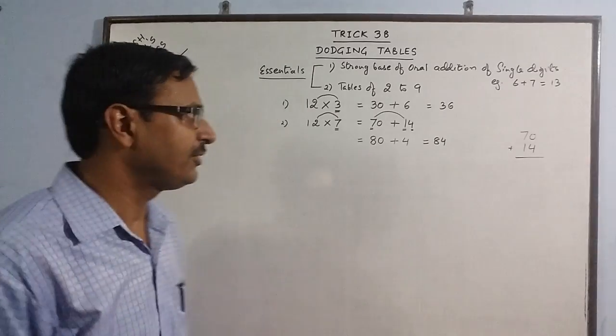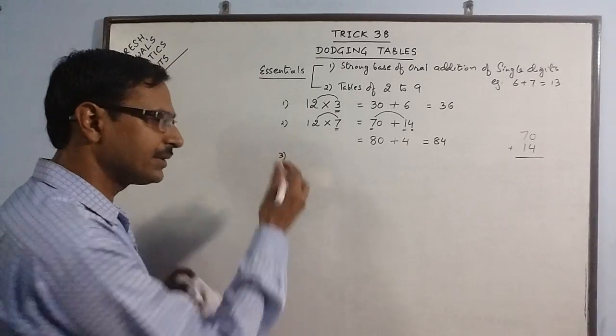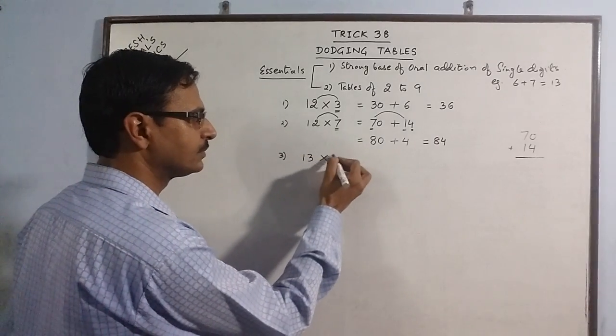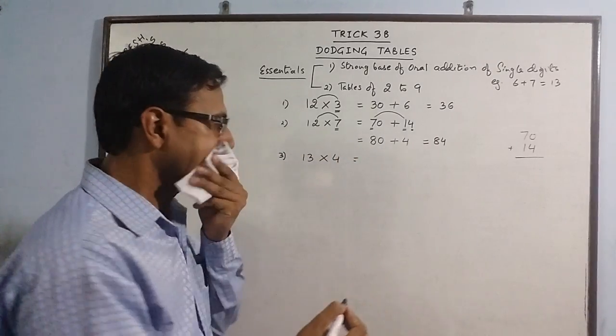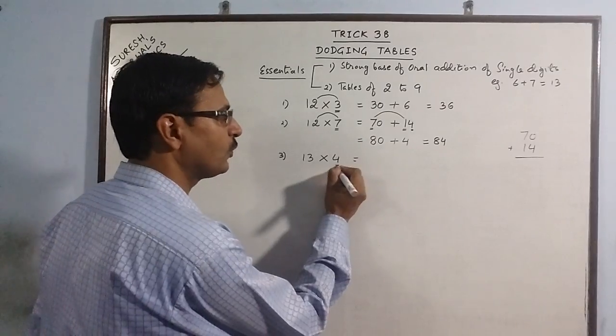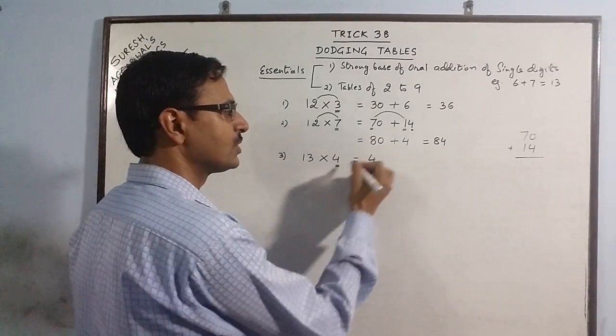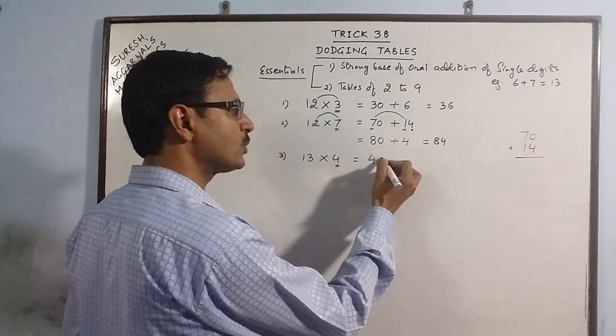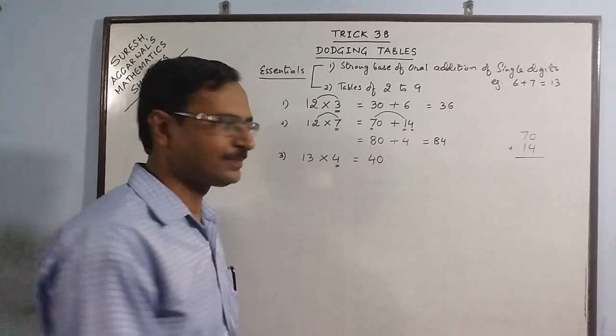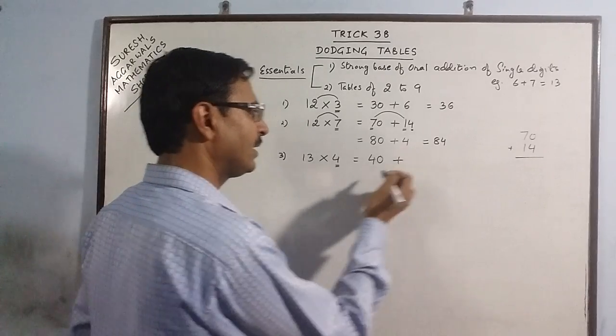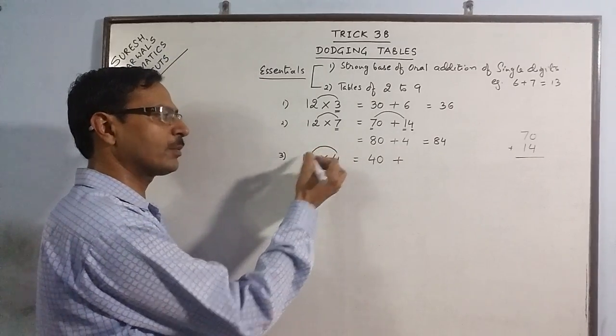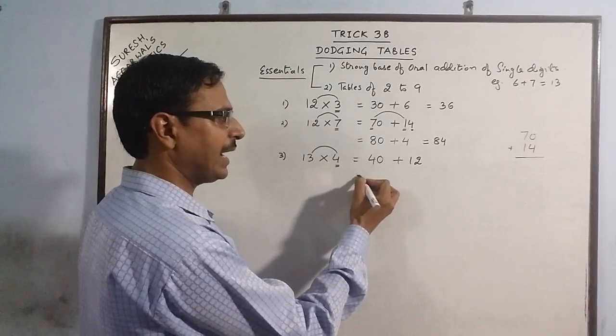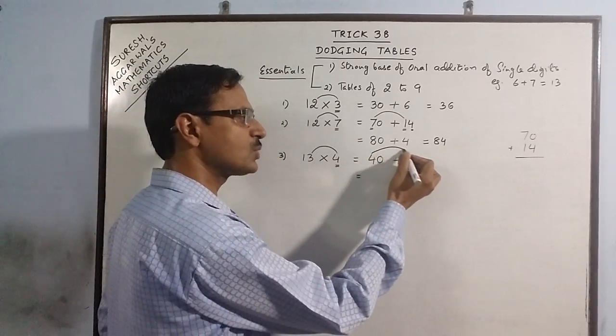If we have some other number, say we have 13 multiplied by 4. When you see the number here is 4, the child has to be told that this 4 has to be suffixed by a 0, and then he has to just multiply 4 by 3, that is 12. For adding these, he has to add these two tens places.